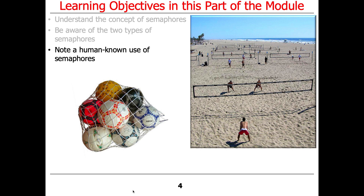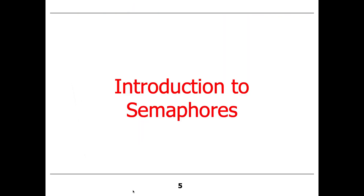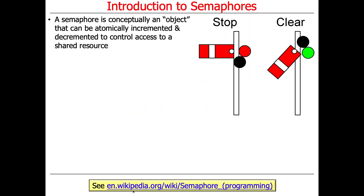And finally, there's a human known use which I'll put in the context of the programming assignment that's coming up. So what is a semaphore? It's basically an object that can be incremented and decremented atomically.